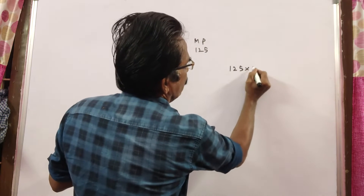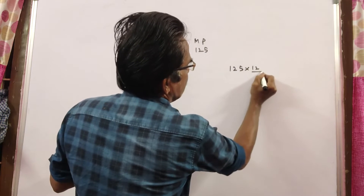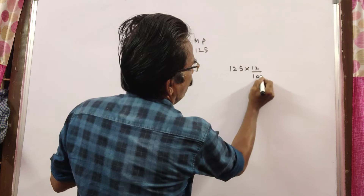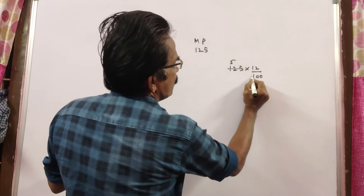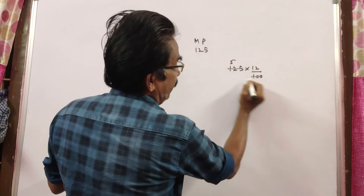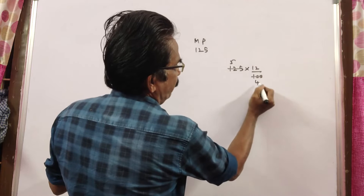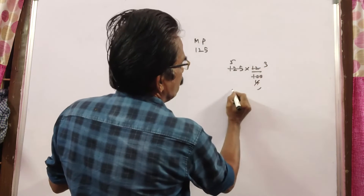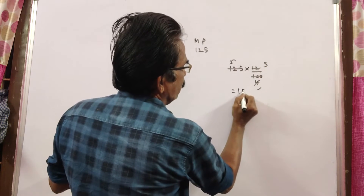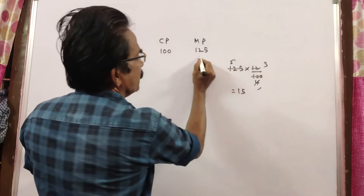Discount is 12% of 125. 25 fives, 4 threes — so discount is 15.